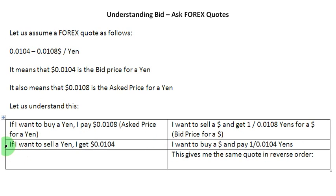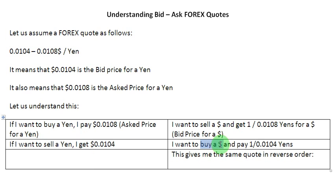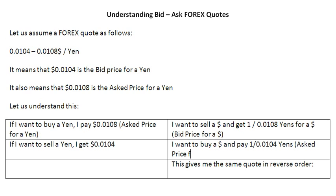Now let us look at the second sentence in the first column of the table. If I want to sell a yen, I am going to get the bid price for it, which is 0.0104. And selling a yen also means the same thing as buying a dollar. So alternatively, I can say that I am buying a dollar, and if I do that, I am going to be paying the price equal to the reciprocal of this number: 1 over 0.0104 yens. That is the price I am going to pay for buying a dollar, and since this is the price I am paying, I am calling it the asked price for a dollar.